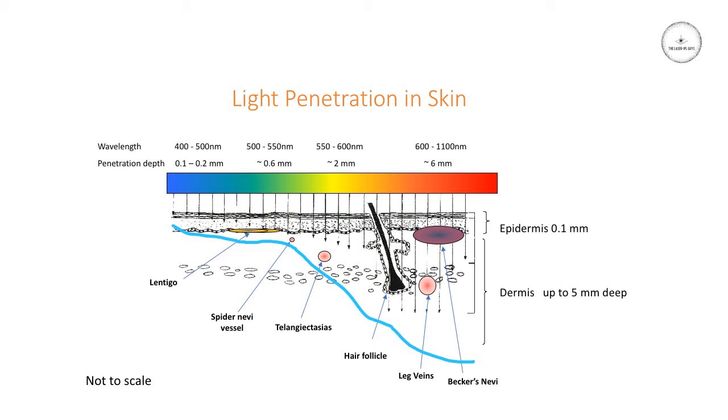Blue light doesn't penetrate too far into the skin, maybe only to about 0.2mm. Green light may go down to around 0.6mm. Yellow a little bit further, maybe a couple of millimeters. But red and near-infrared light can penetrate the furthest into the skin.